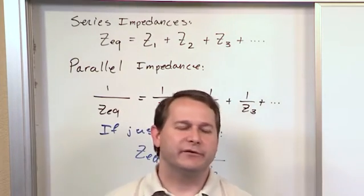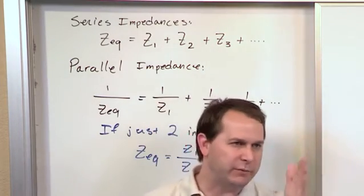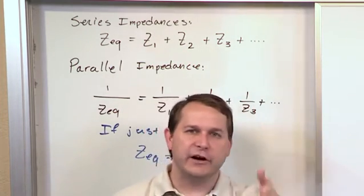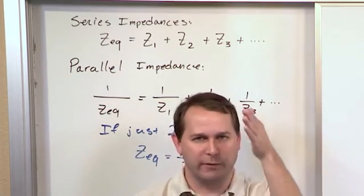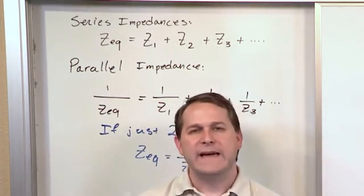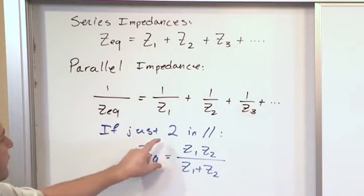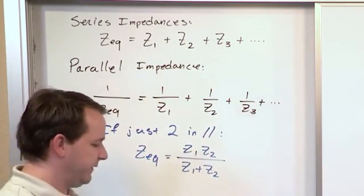But very frequently in circuits, you have two components in parallel, one resistor in parallel with another. What this is saying is that the same rule applies if you have an inductor in parallel with a capacitor, or a resistor in parallel with a capacitor. Any two items, if it's just two of them, this can be shown to reduce to product of the impedances over the sum of the impedances.